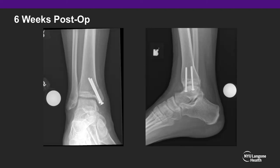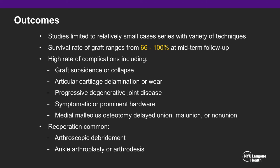Following surgery, this patient demonstrated a stable union of his medial malleolus osteotomy and has since returned to normal activities of daily living and early sporting activities without any residual complaints. The outcomes for osteochondral allograft transplantation to the talus have been relatively promising. Survival rates range from 66% to 100% at midterm follow-up. That being said, there is a relatively high rate of complication, with up to 50% of patients requiring re-operation within the first 13 years after surgery.